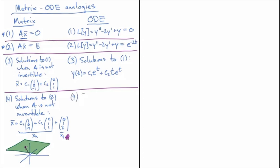What is the analogy here with ODEs? The analogy is that solutions to equation 2 on the right-hand side look like y of t equals c1 e to the t plus c2 t e to the t plus...